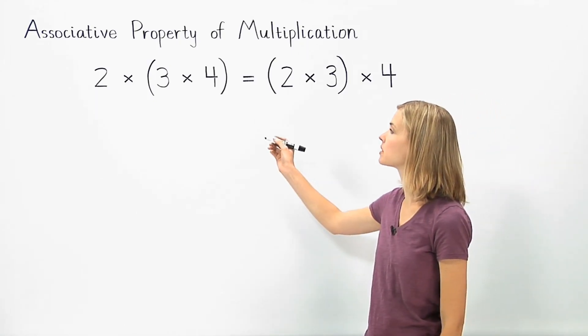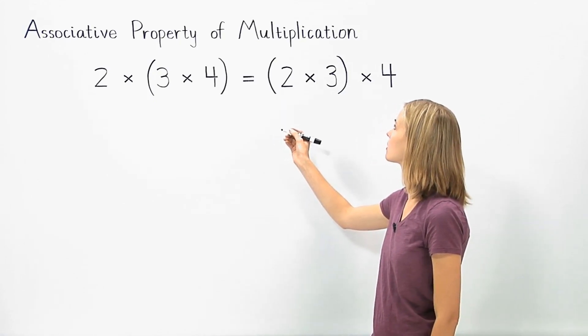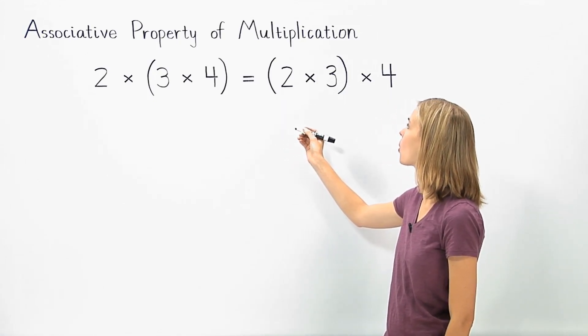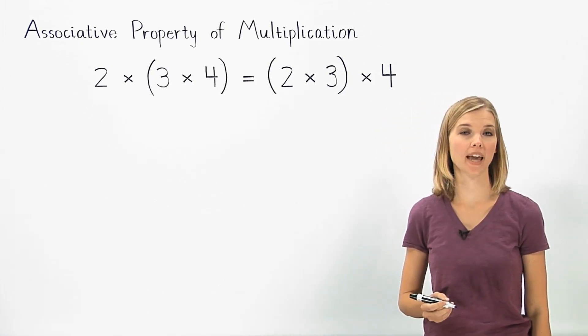The problem 2 times (3 times 4) equals (2 times 3) times 4 demonstrates the associative property of multiplication.